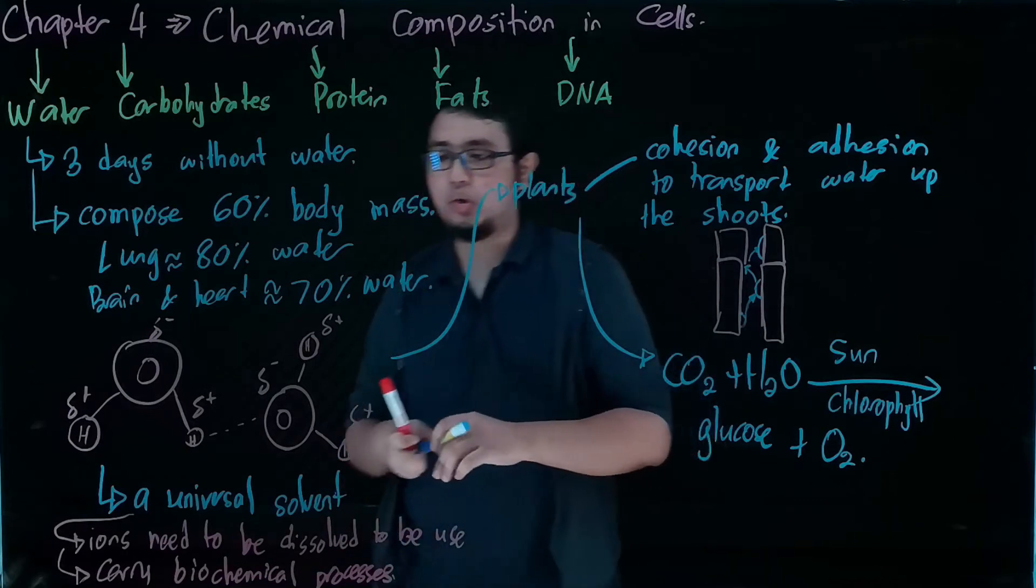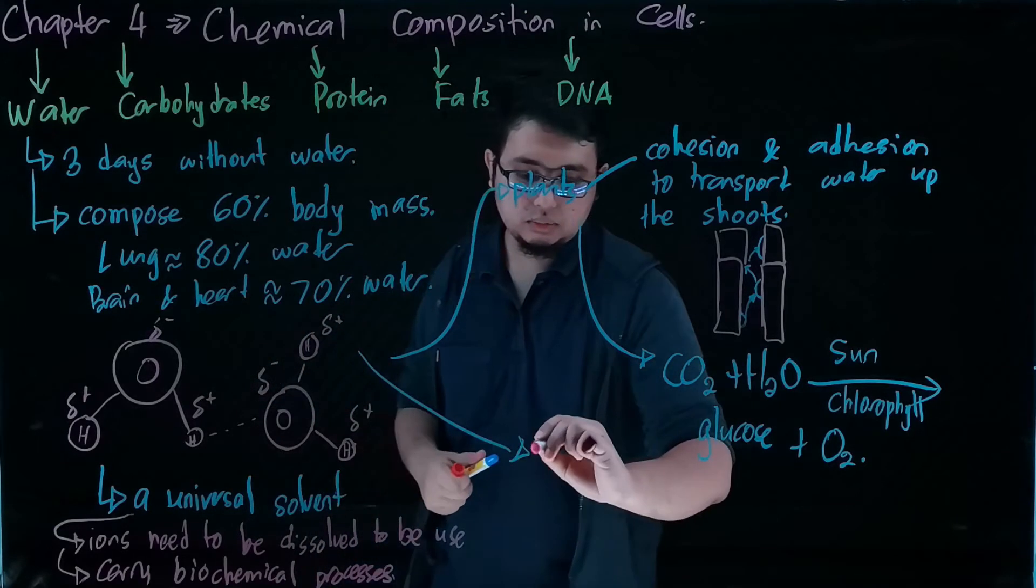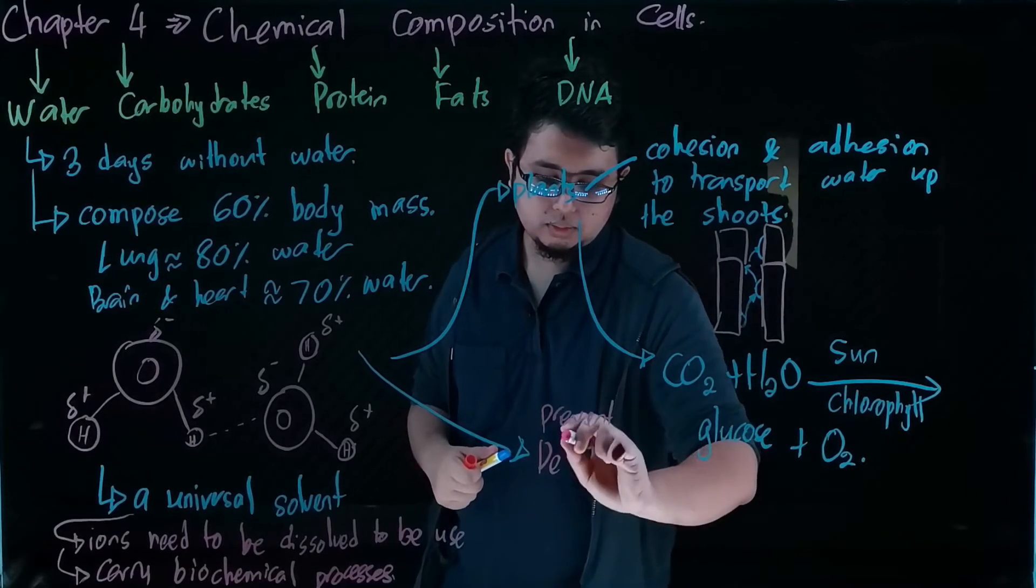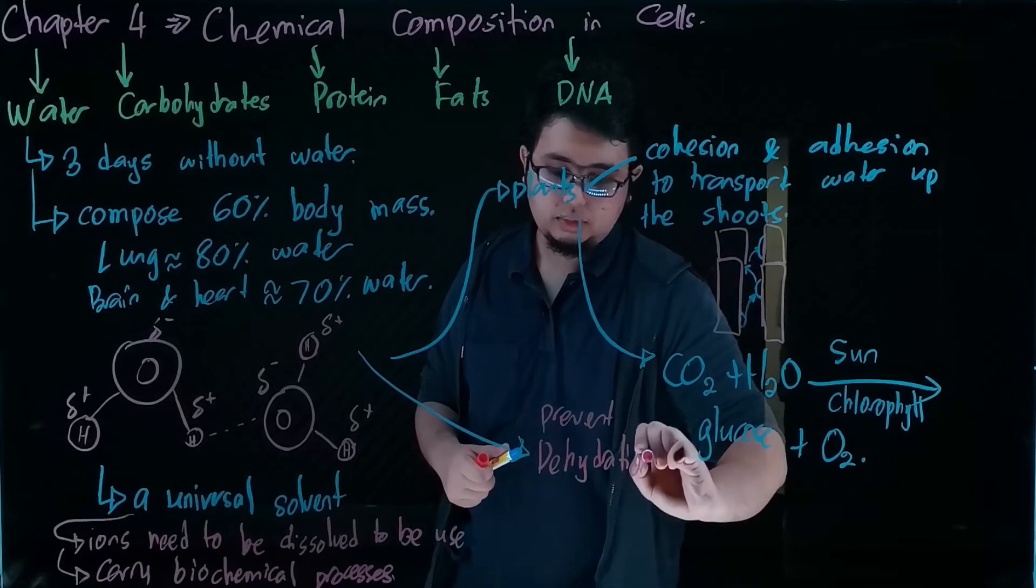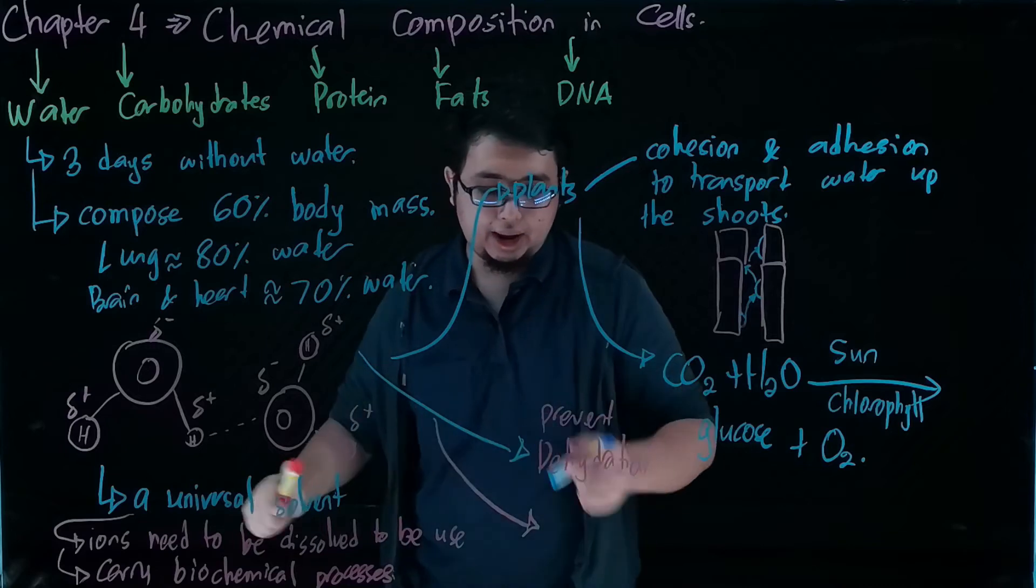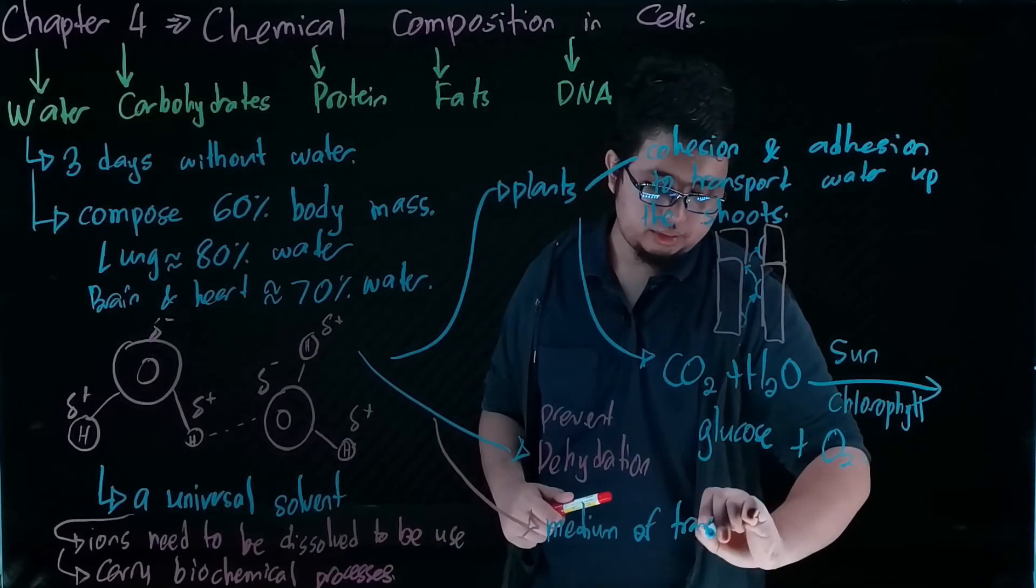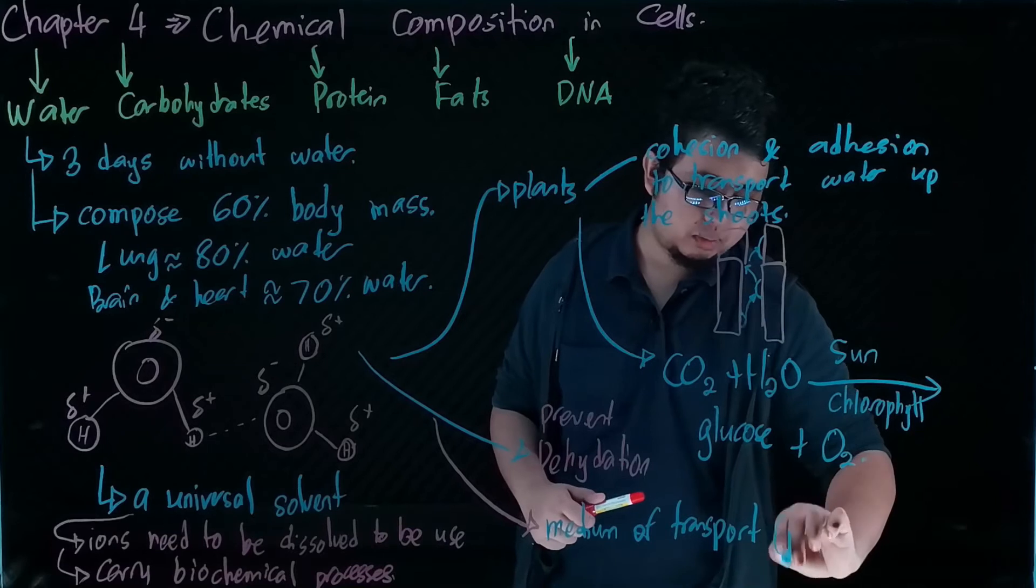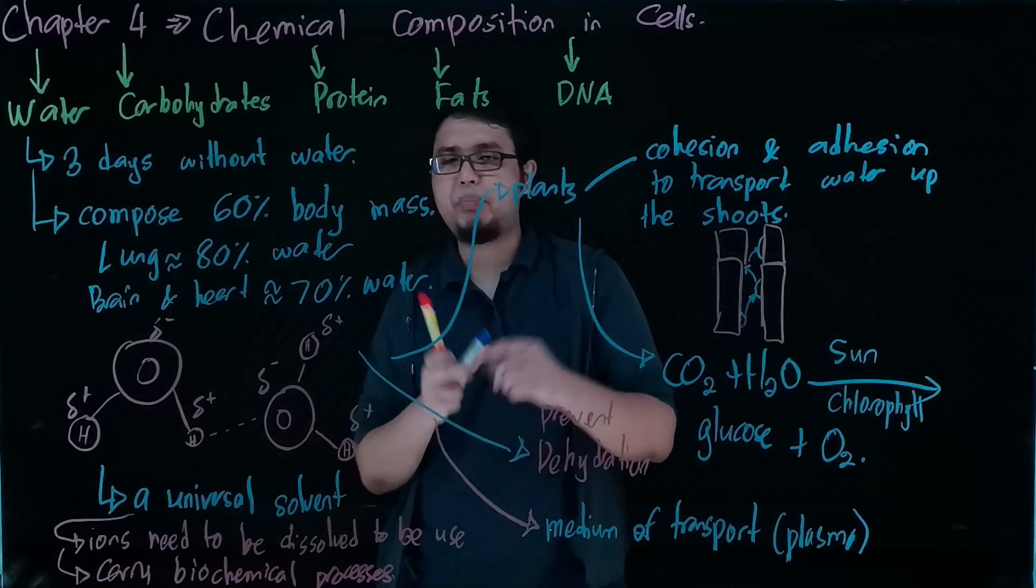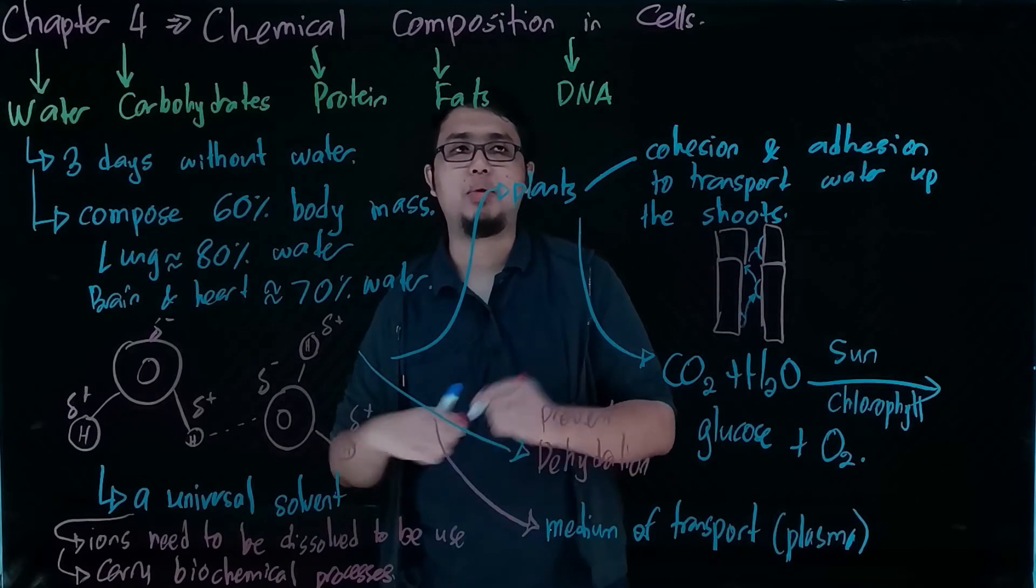That is why plants require water in daily life, and for us we need it as a solvent. Other than that, water is needed because it prevents us from dehydration, and water is used in our daily life where water acts as the medium of transport, for example in plasma. All this nature of water makes it the perfect solvent for our body.